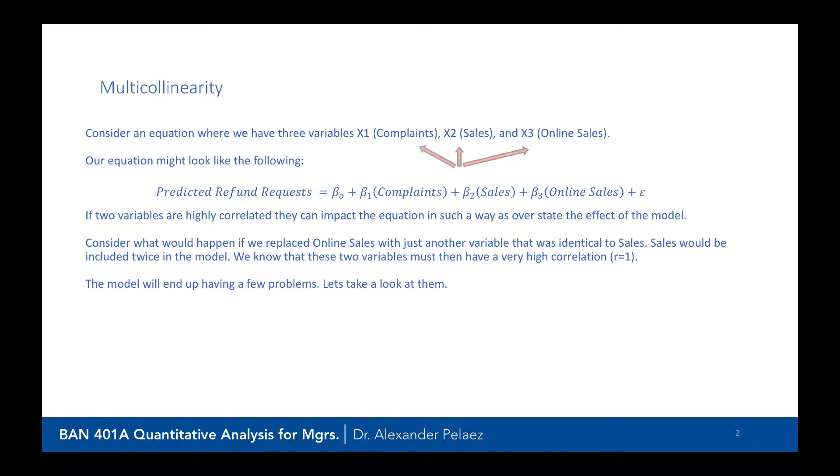Our equation might look like the following: predicted refund requests equals beta 0 plus beta 1 complaints plus beta 2 sales plus beta 3 online sales plus an error term.